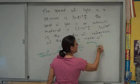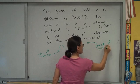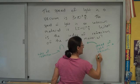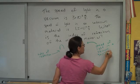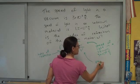C, speed of light in a vacuum, which is basically 3 times 10 to the 8 meters per second. And C, speed of light in the material.